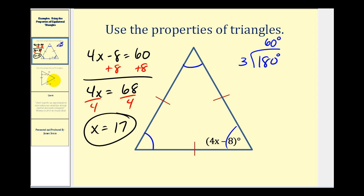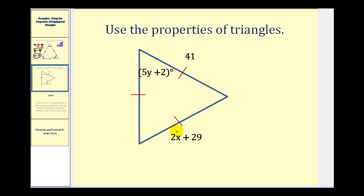Let's look at another example. Here we want to determine the value of x and the value of y. Let's start with the value of y since it's very similar to the last problem. Again we have an equilateral triangle which means it's also equiangular. So each of the angles must have a measure of 60 degrees.